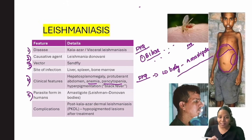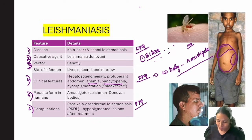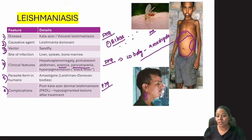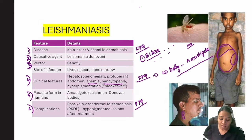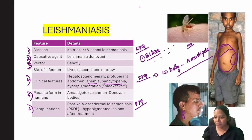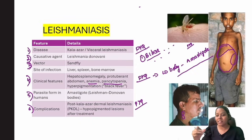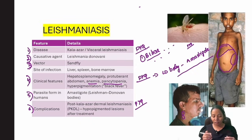Another important PYQ is the image of a gentleman with hypopigmented patches — this is post-kala-azar dermal leishmaniasis (PKDL). You will see this in patients already treated with amphotericin B. The typical PYQ history: a patient from Bihar had recurrent fever in childhood, was treated, and then developed hypopigmented patches.